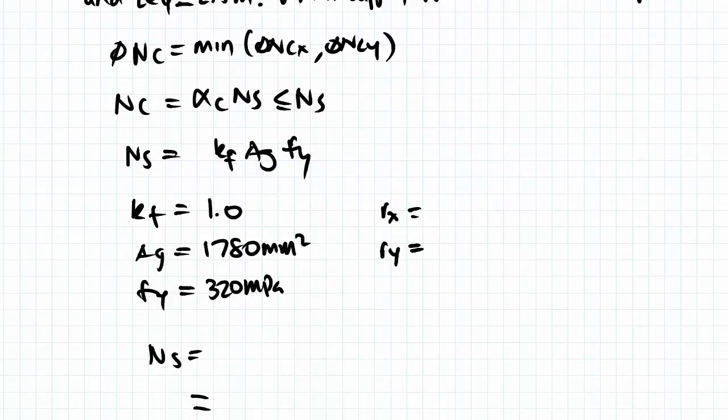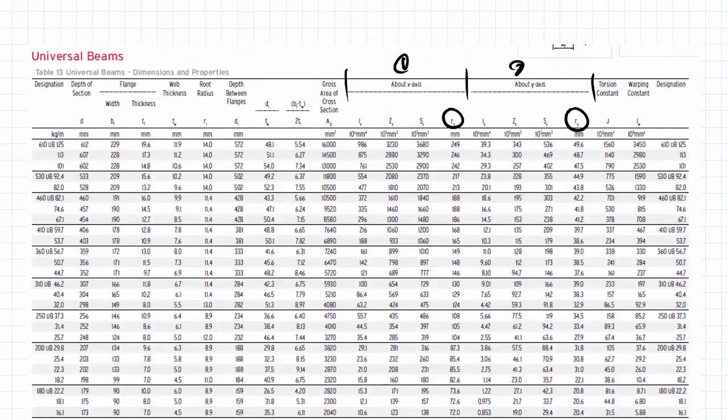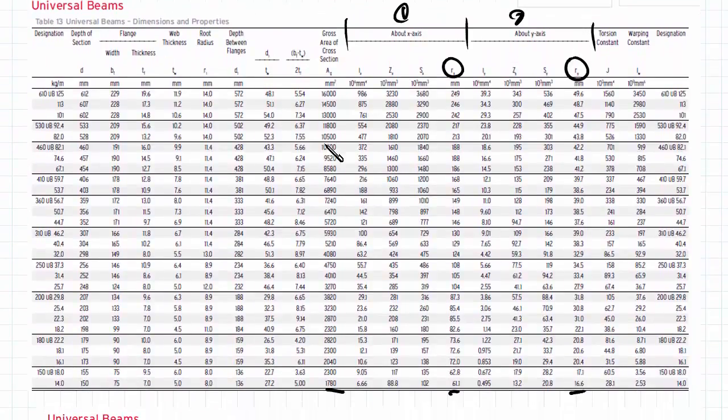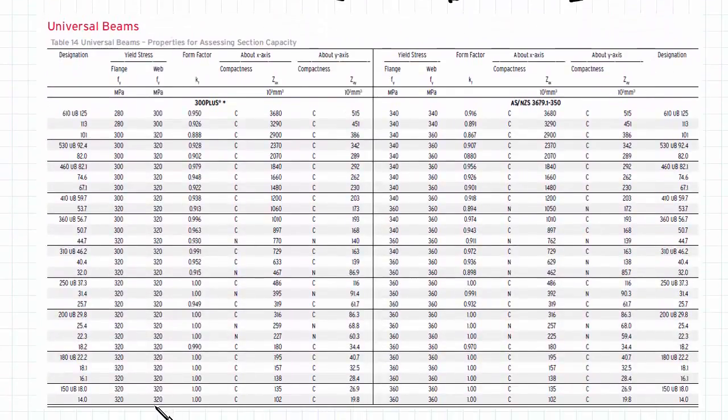So we can go ahead and solve that first. First we need a couple of variables: kf, Ag, and fy in particular. We can find all of them straight away from the OneSteel tables. Ag is 1780 mm², fy is 320 MPa, and kf is 1.0. I know previously we've had to manually solve for kf, but...